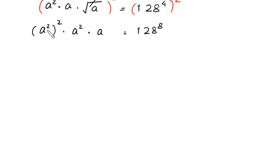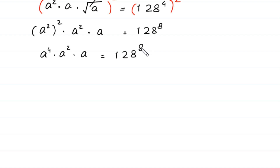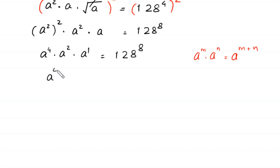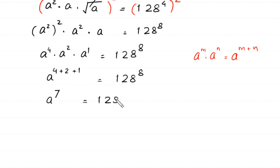Next, a squared whole squared becomes a to the power 4, times a squared, times a, is equal to 128 to the power 8. This a has power 1. By using the power rule a^m · a^n = a^(m+n), we add these powers: a to the power 4 plus 2 plus 1 equals a to the power 7, which equals 128 to the power 8.